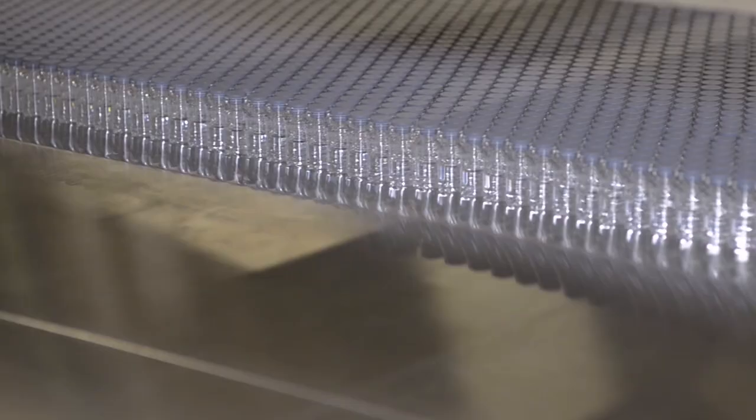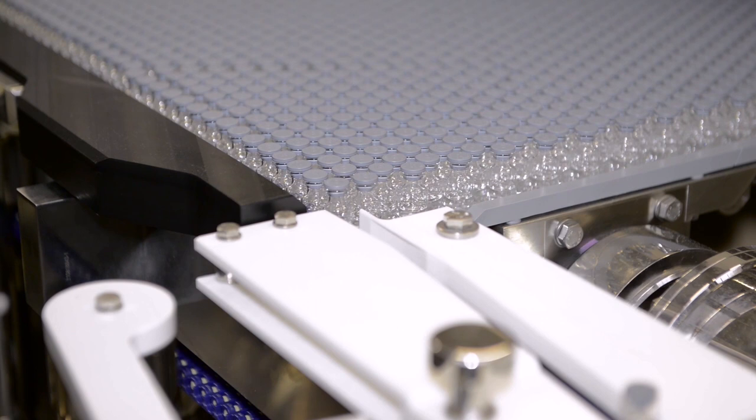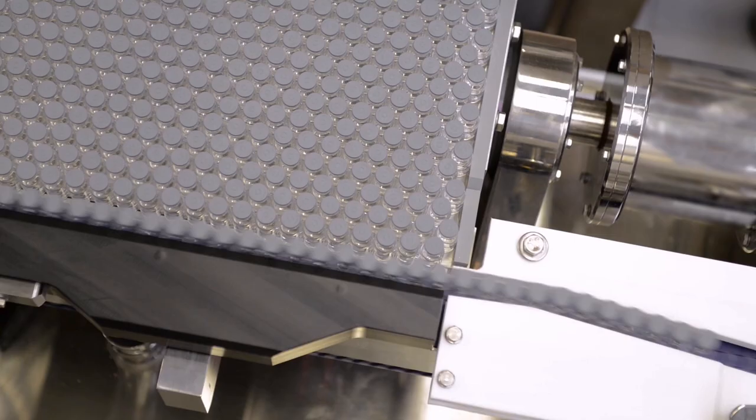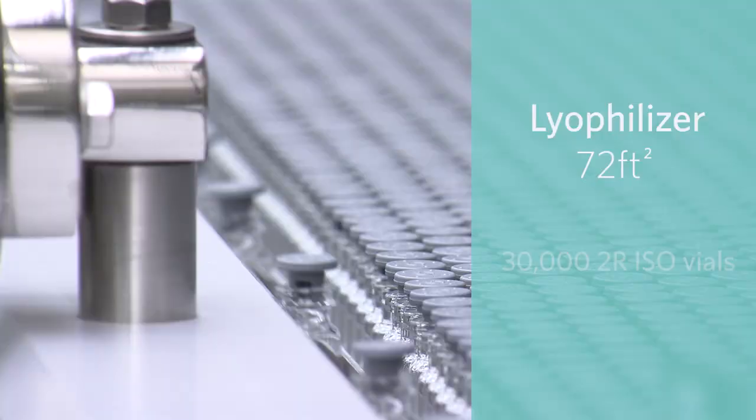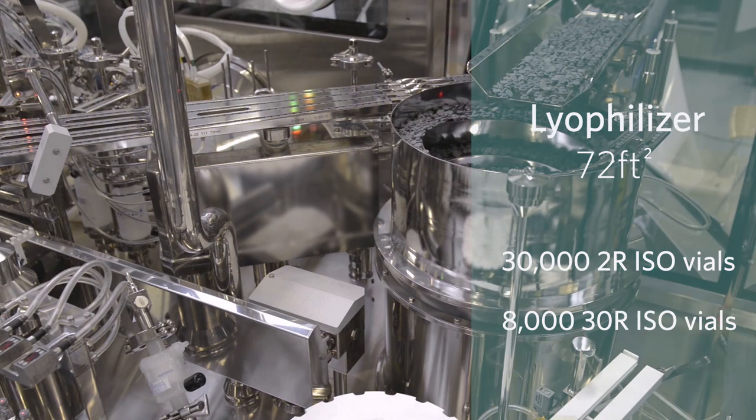For freeze-dried products, the vials enter and exit the 72-square-foot lyophilizer using an automated loading and unloading system that feeds vials row by row. The lyophilizer can hold 30,000 2R ISO vials and 8,000 30R ISO vial sizes.